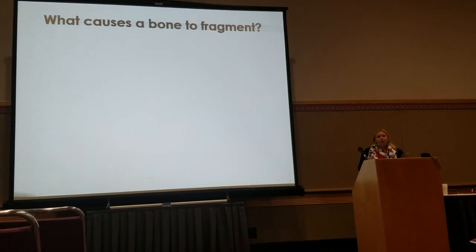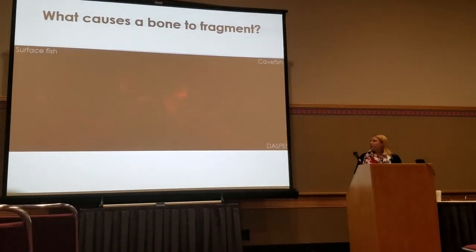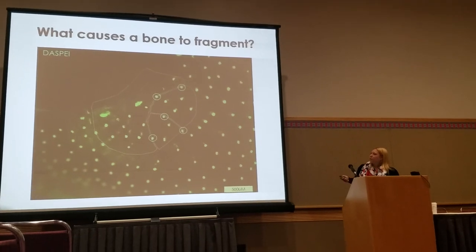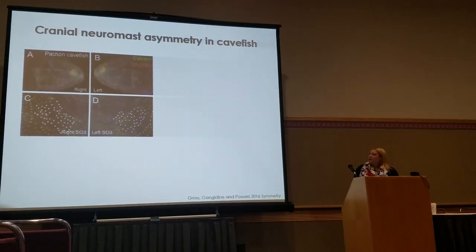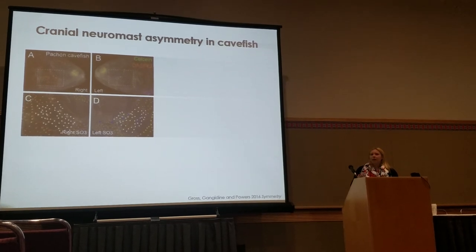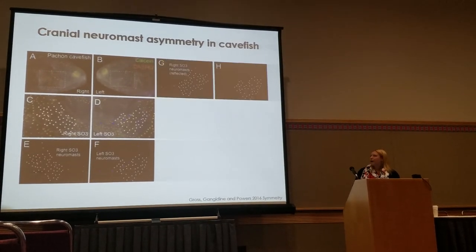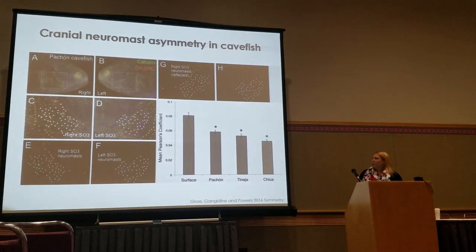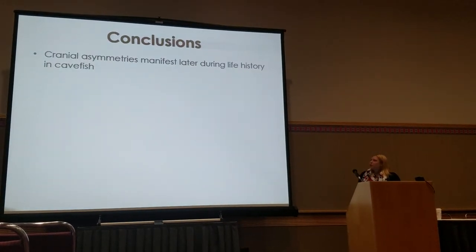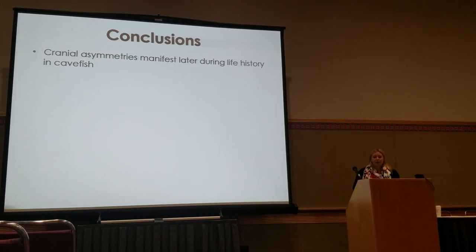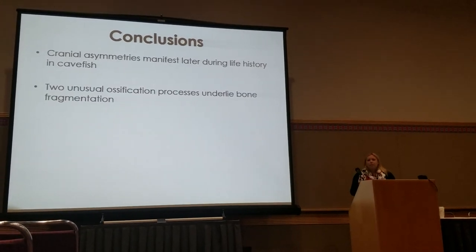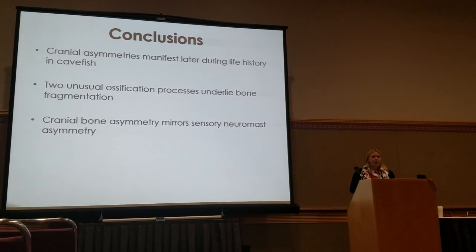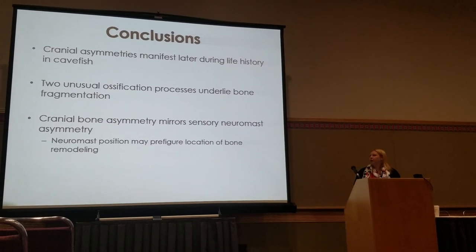Why would a bone fragment? We think it might have something to do with neuromasts. The lateral line system is expanded in cave fish, and these neuromasts are present around where these fragments occur. We did an analysis where we found asymmetry in the number and position of neuromasts on each side — reflecting one side onto the other, the position and number do not correlate. This happens not just in one cave fish population but many. In conclusion, cranial asymmetry manifests later in the life history, with two mechanisms — the more common being this post-ossification bone remodeling — and this may relate to the expansion of the sensory system and cranial neuromast location.